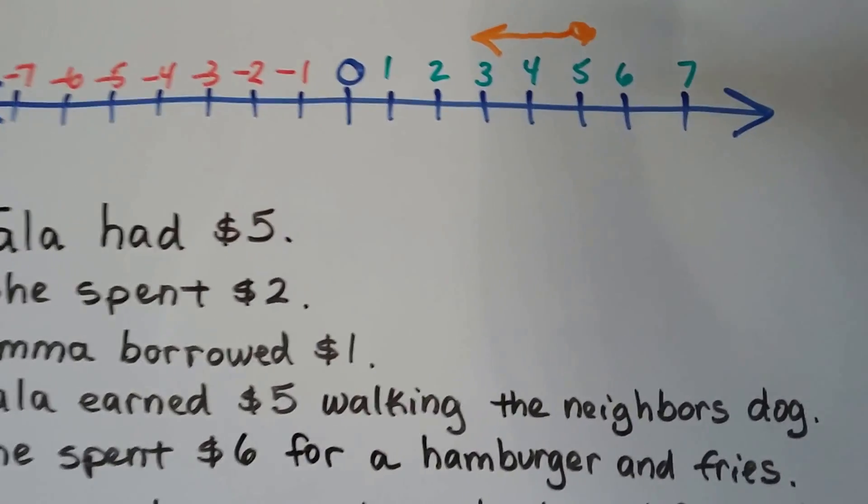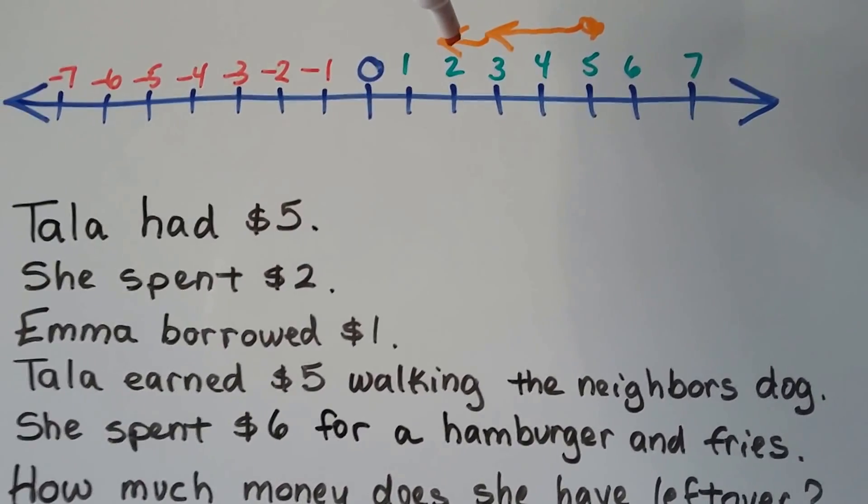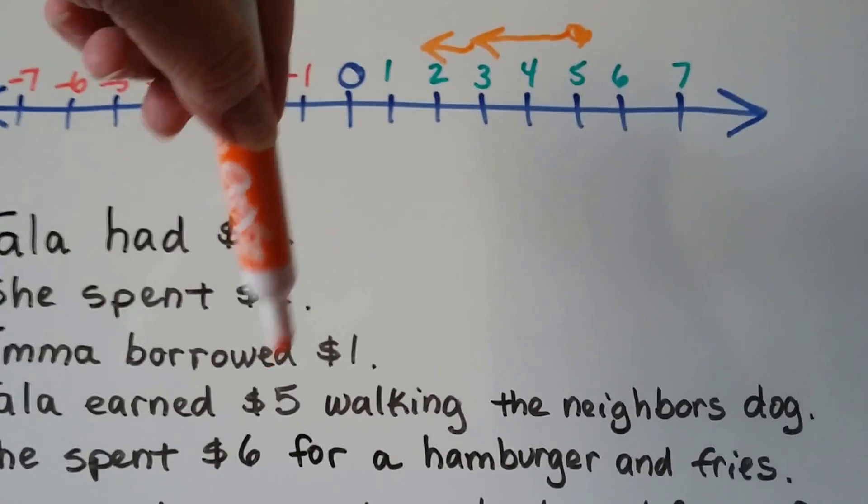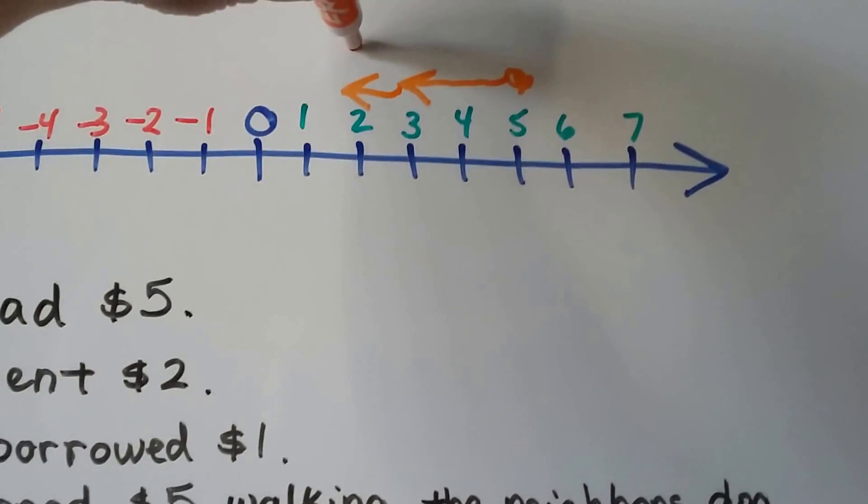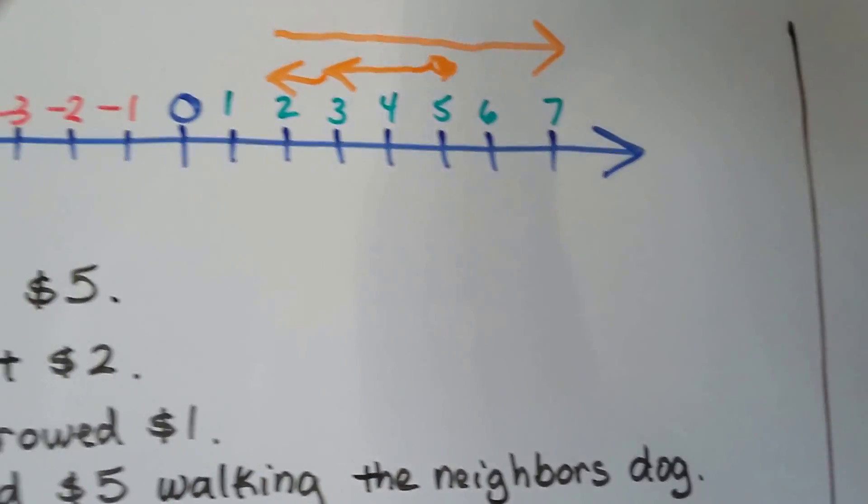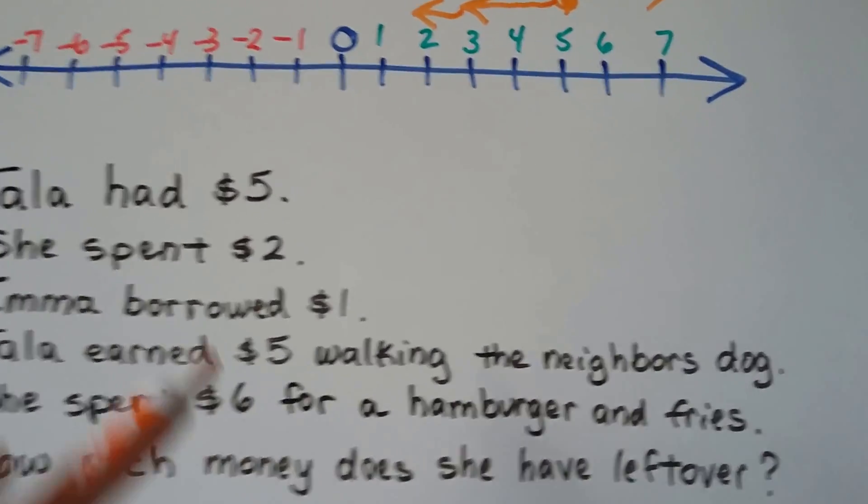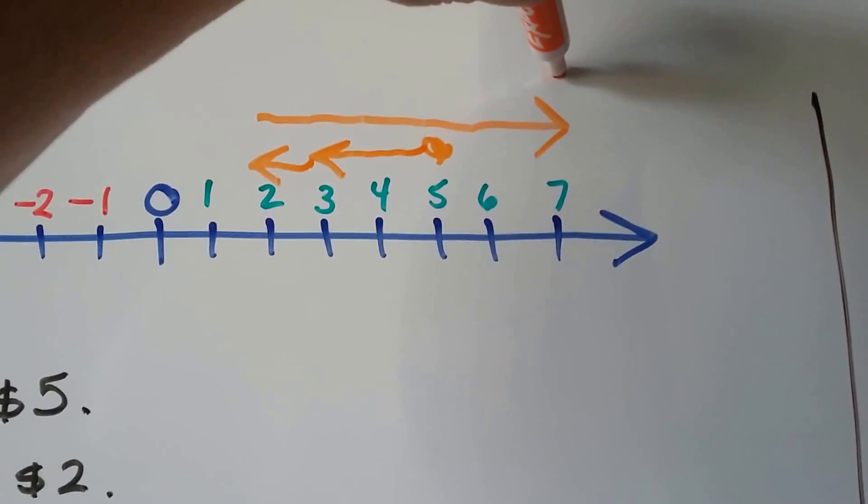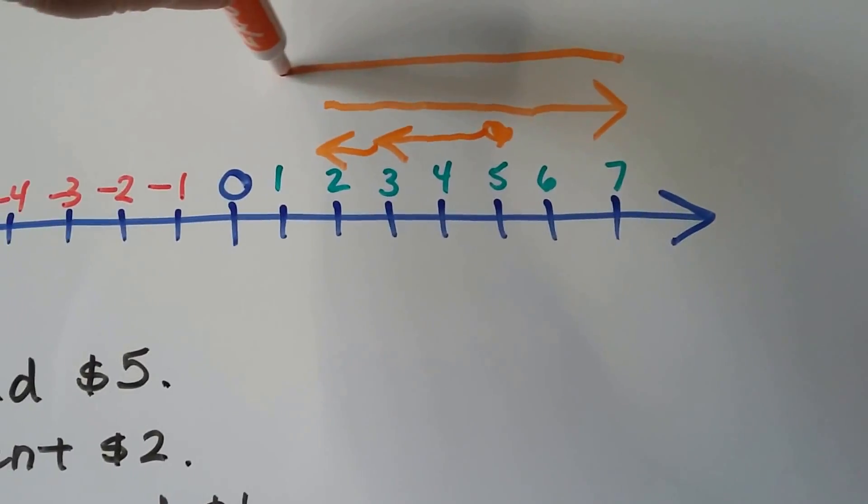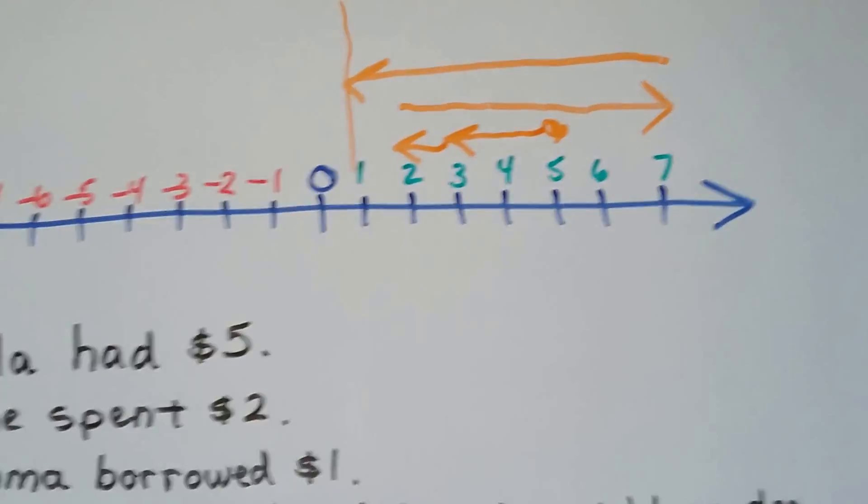Emma borrowed one so we're going to take one more away. Now she's at $2, right? Then she earned $5 walking the neighbor's dog so we're going to go back $5. 1, 2, 3, 4, 5. Now she's at $7 but then she spent $6 for a hamburger and fries. So from the $7 we're going to go back this way because she spent $6 on the hamburger and fries and this is where we end up. We end up with $1.